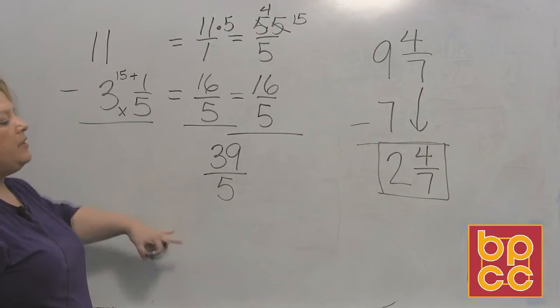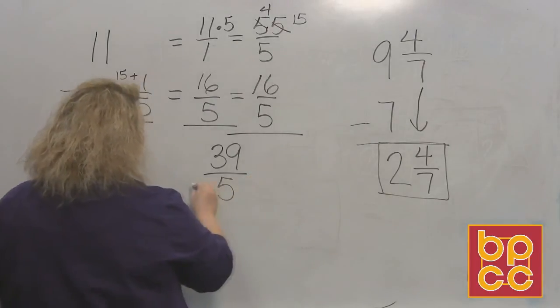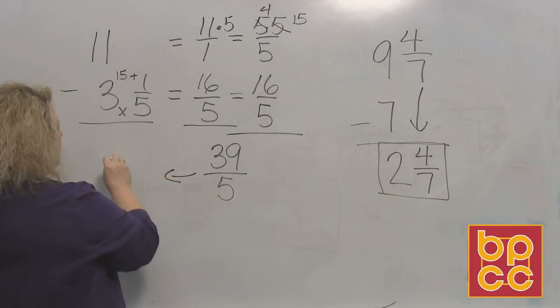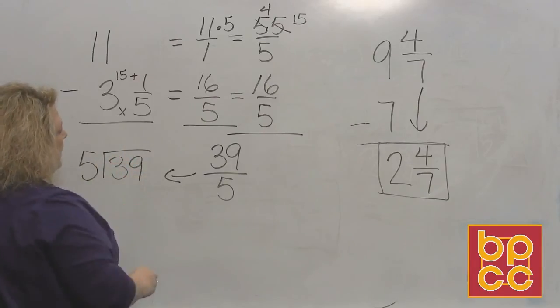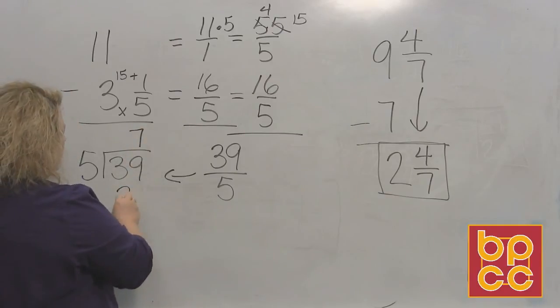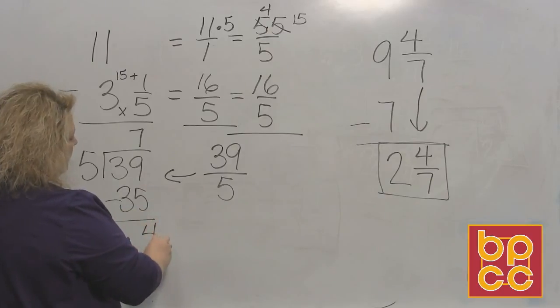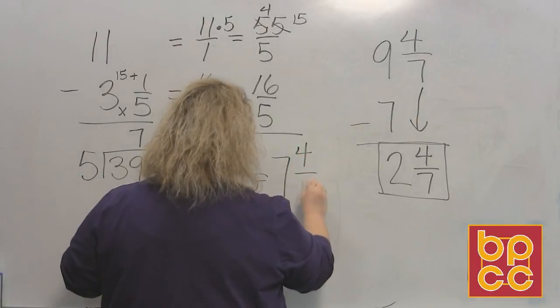Now once you do this, you can do like we did when we were adding and you change it into a mixed number. So that would be 5 on the outside, 39 on the inside, and we divide. Five divides into 39 seven times, which makes 35, and that leaves us 4. So the answer would be 7 and four-fifths.